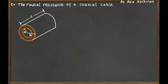We have a hollow cylinder — it's a conductor — and we want to calculate its resistance. When you apply a potential difference between the inner surface and outer surface, the current will flow in the direction of the maximum change of potential, which means the current flows from the inner surface toward the outer surface in the radial direction. So we have a radial current.